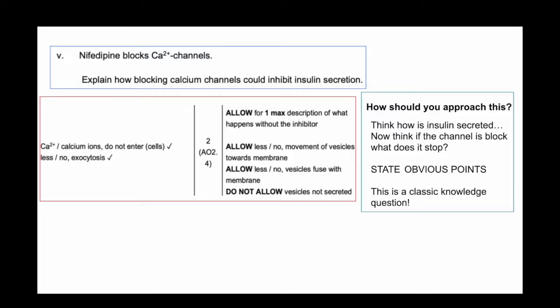They know that if the channel is blocked, calcium ions won't enter, but they don't say it. They think it's kind of a given. But remember, the mindset you should have when answering exam questions is that the examiner doesn't know - you need to tell them. So if you didn't write that, you'd only get one out of two marks. The 'no exocytosis' is the one everyone's going to get most probably.